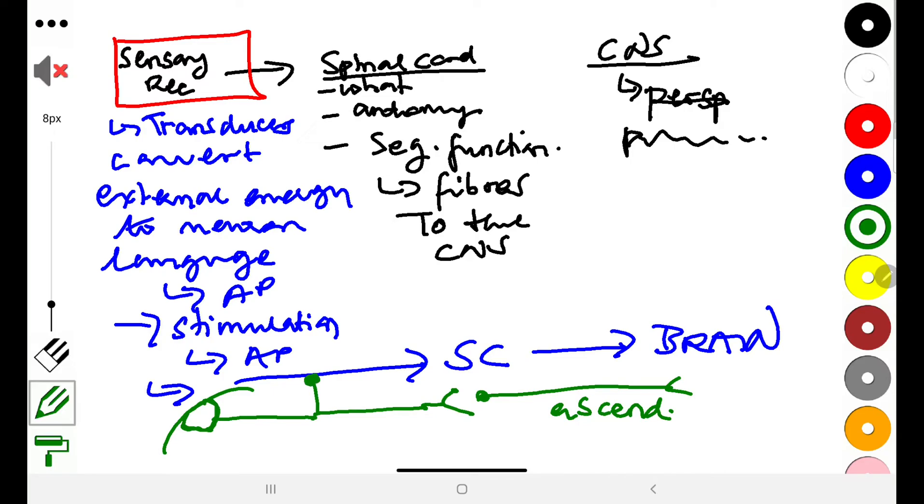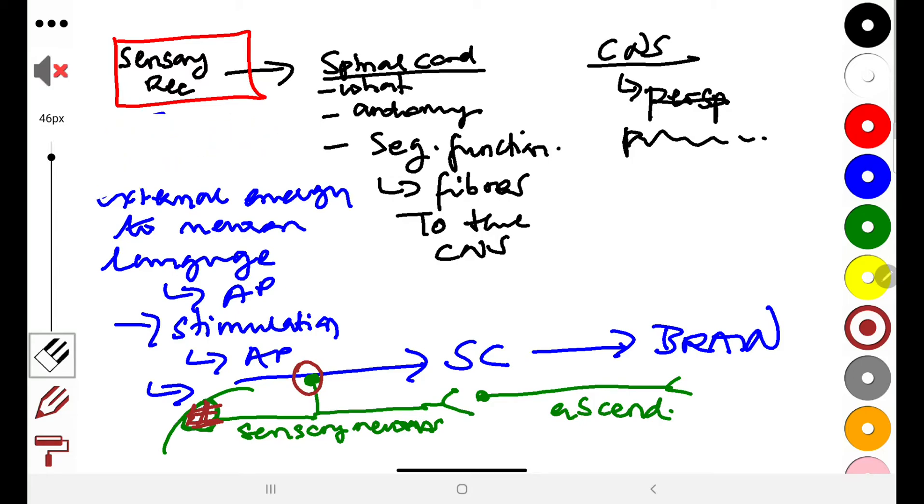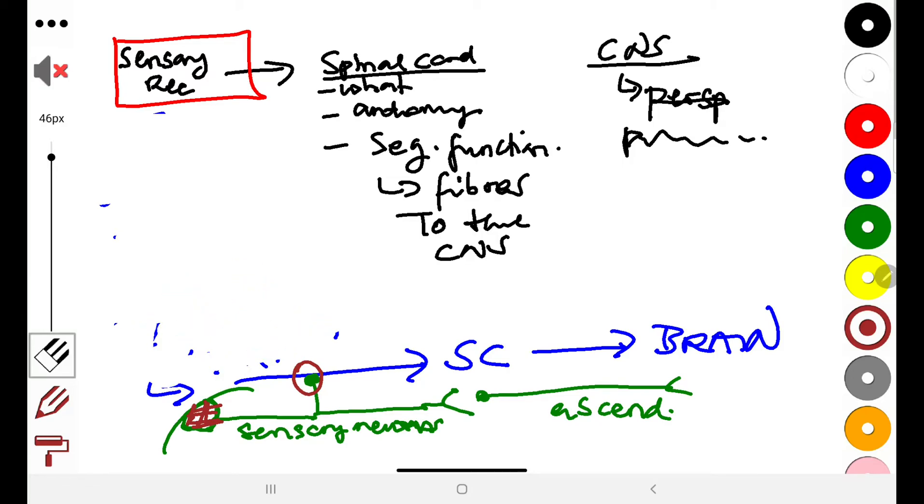These are known as sensory neurons. Sensory neurons, of course, we have this sensory component, which is what we are calling the sensory receptors, and then you have your body here, your soma, and then you have it synapsing. It's not all the time that they are like this.